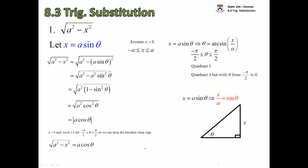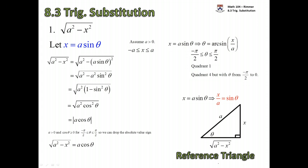Draw a right triangle with theta at one of the base angles. The opposite side is x and the hypotenuse is a — sine is opposite over hypotenuse. The third missing side is found by the Pythagorean theorem: it's the square root of a squared minus x squared, which is the root that got us here in the first place. This is your reference triangle. For an indefinite integral you'll need this to get back into x's; for a definite integral you can use it for limit switching.